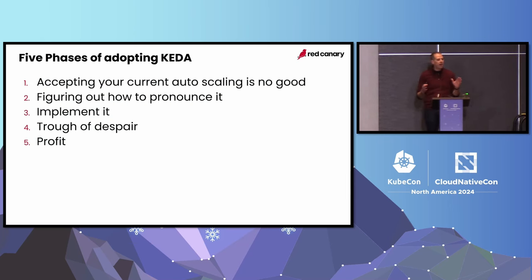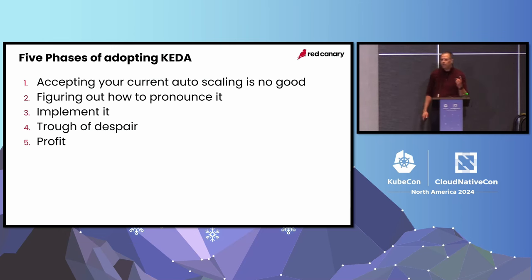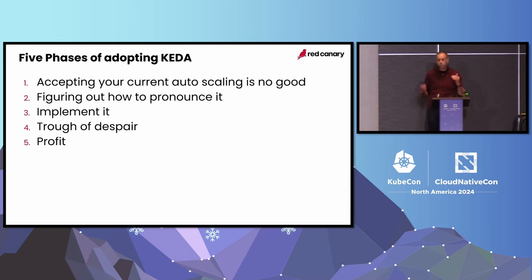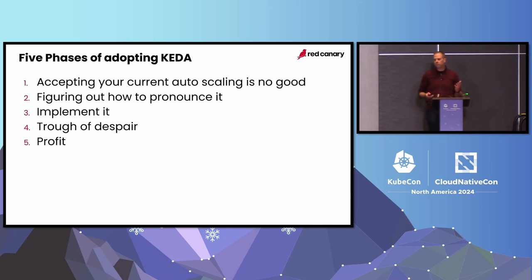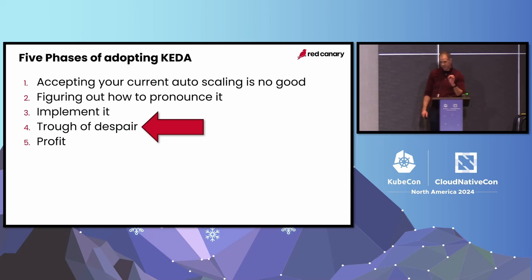There are really five phases of adopting KEDA within your organization. The first is accepting that you need a new autoscaler. The second is figuring out how to say the name — I call it KEDA because I saw a video on YouTube. We spent more time on that than you might think. The third is to implement it. The fourth is what I call the trough of despair, and then the fifth is, obviously, the profit. I'm going to talk about the trough of despair today.